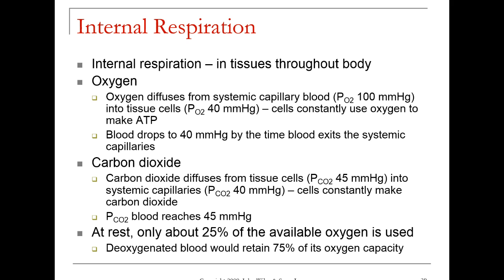As cells are active with aerobic cellular respiration, they use up oxygen but they're producing carbon dioxide. Right around your tissues, the cells are giving off carbon dioxide, creating a local partial pressure of carbon dioxide in the interstitial fluid of around 45 millimeters of mercury. In the systemic capillaries coming from the lungs, we have a partial pressure of carbon dioxide of 40 millimeters of mercury. So we move carbon dioxide from the tissues into the systemic capillaries until it reaches 45 millimeters of mercury equilibrium, and then that higher carbon dioxide blood returns to the heart and back to the lungs.